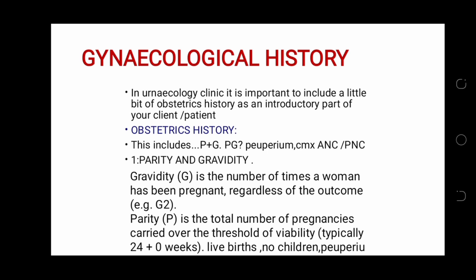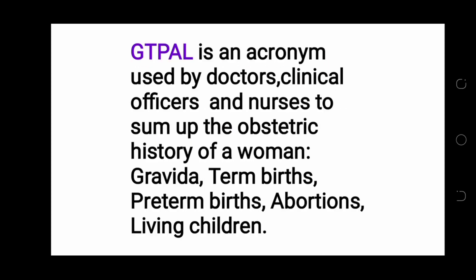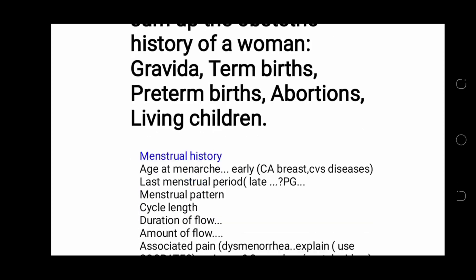In gynecological history it is also very important to include obstetric and gynae history. Obstetric history includes parity and gravity, the puerperium, complications during antenatal care, complications during postnatal care, number of live births, and number of children. GTPAL is an acronym used by doctors, clinical officers, and nurses to summarize the obstetric history of a woman: Gravida, Term births, Preterm births, Abortion, and Living children.